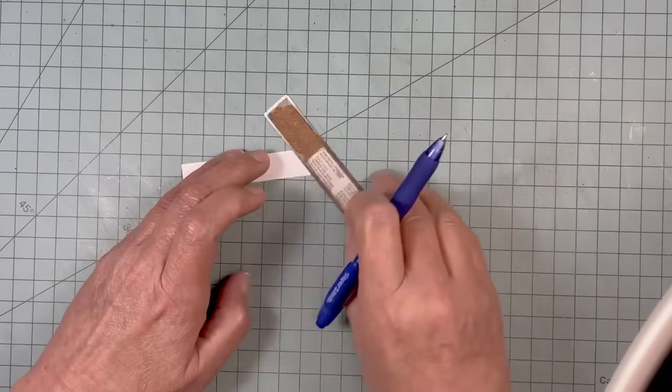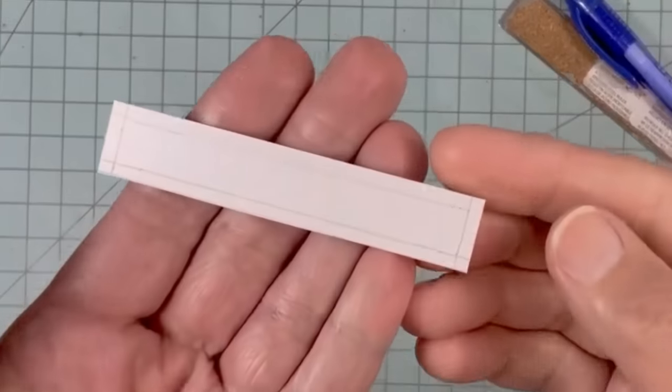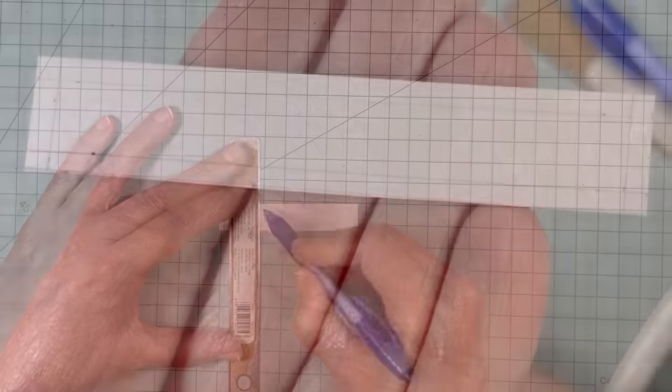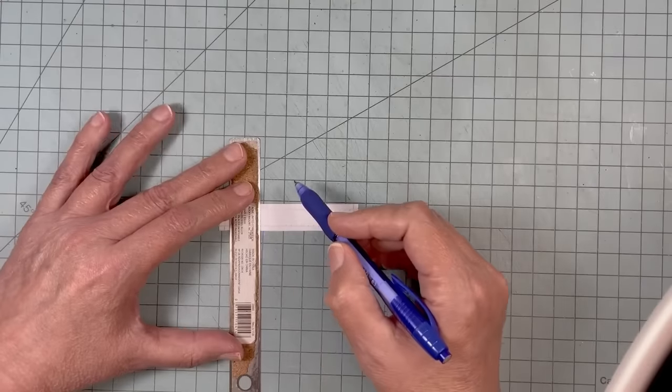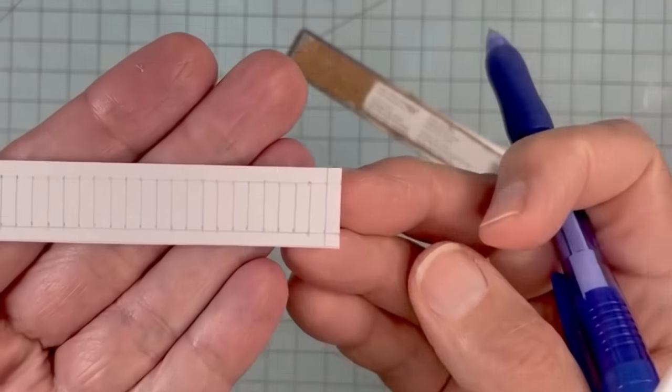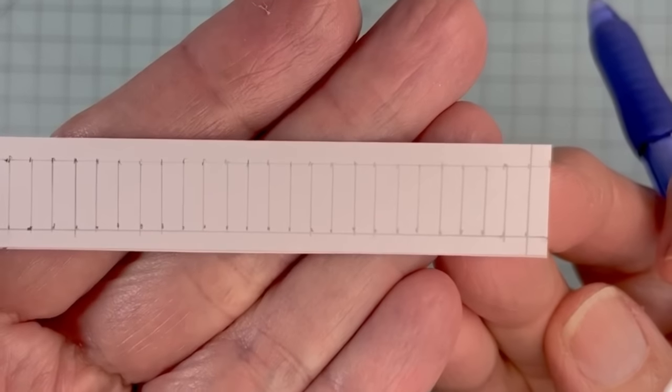I drew an eighth inch border all the way around. From one short end, I drew vertical lines that were one-eighth inch apart. It should look something like this.